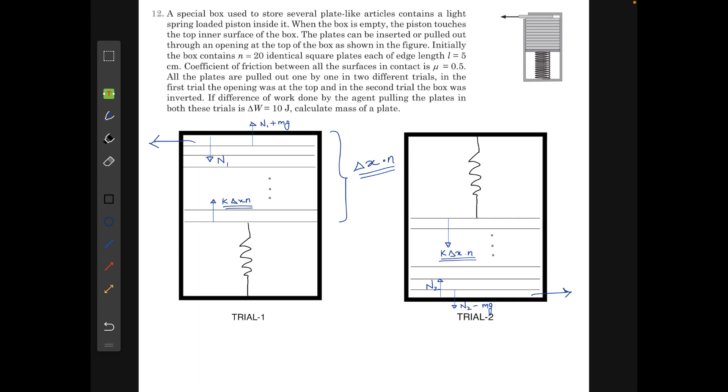Initially the box contains n=20 identical square plates each of edge length l=5 cm. Coefficient of friction between all the surfaces in contact is mu=0.5. All the plates are pulled out one by one in two different trials. In the first trial the opening was at the top and in the second trial the box was inverted. If the difference in the work done by the agent pulling the plates in both these trials is delta w=10 joules, calculate the mass of a plate.